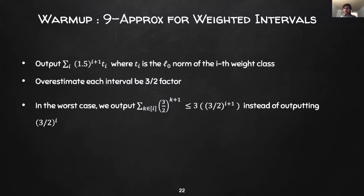In the worst case, each weight class could be non-empty and this yields an additional factor of 3. Overall, we obtain a 9 halves approximation to the weighted MIS contained in the odd cells. We can then repeat this analysis with the even cells and output the maximum of the two estimators. This results in an overall 9 approximation.